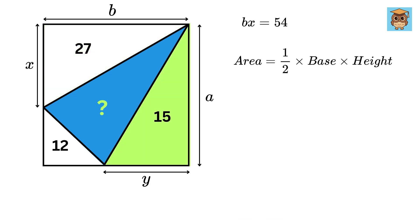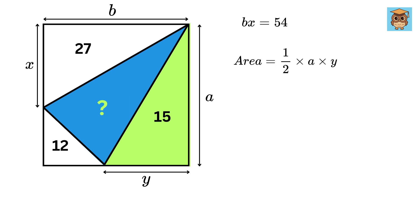Now consider this triangle. Its base is y and its height is a, so its area is half of a times y. Since its area is 15, we have ay equals 30.